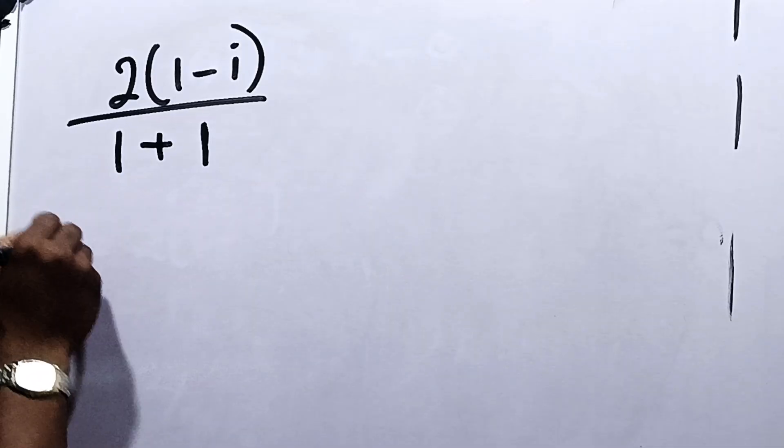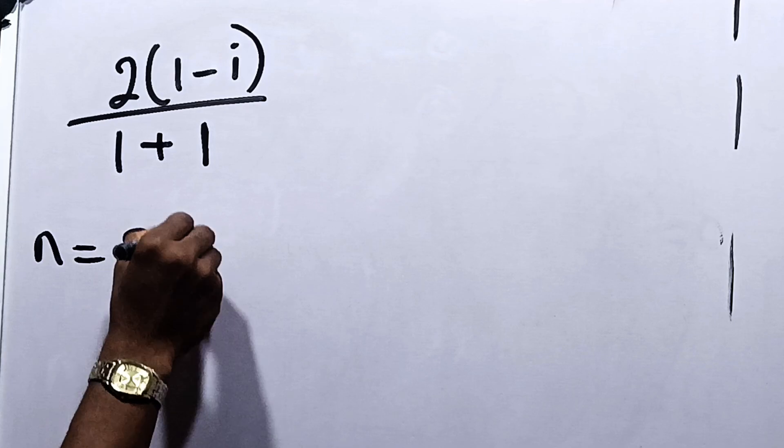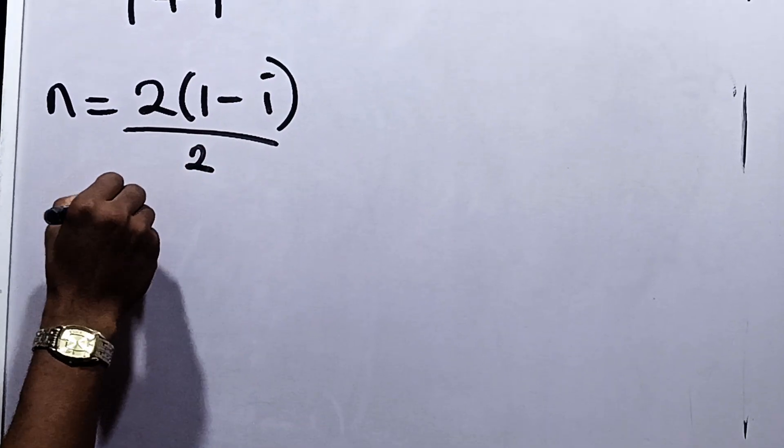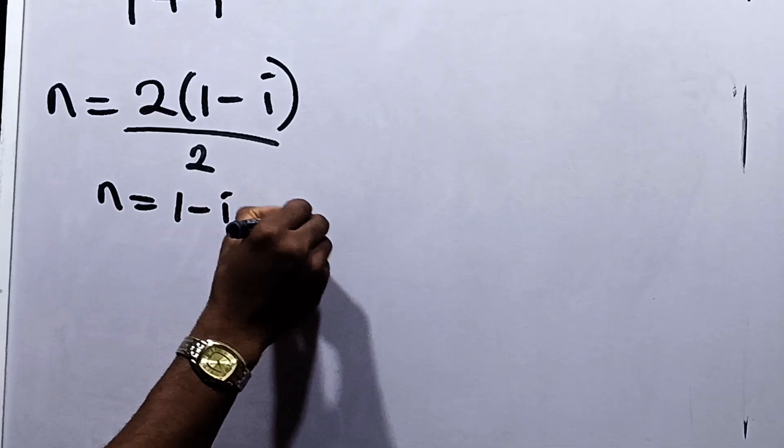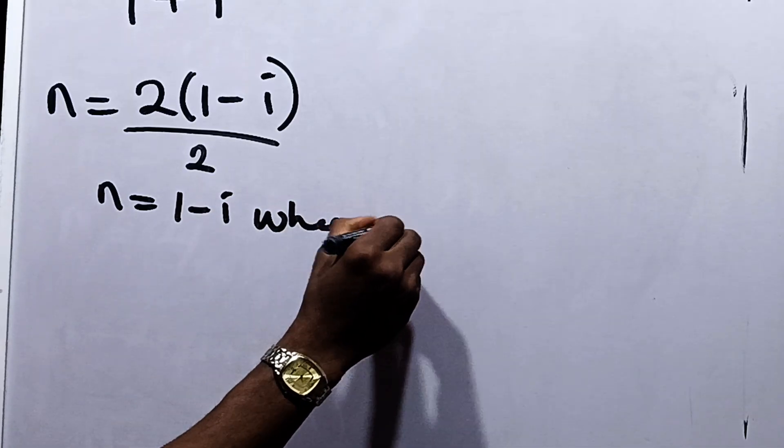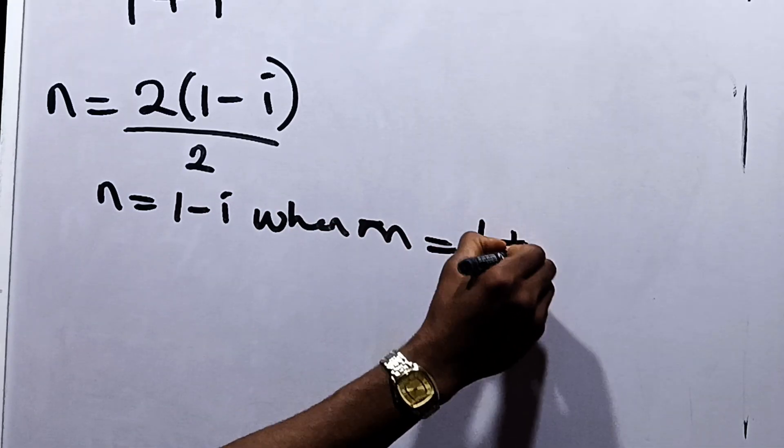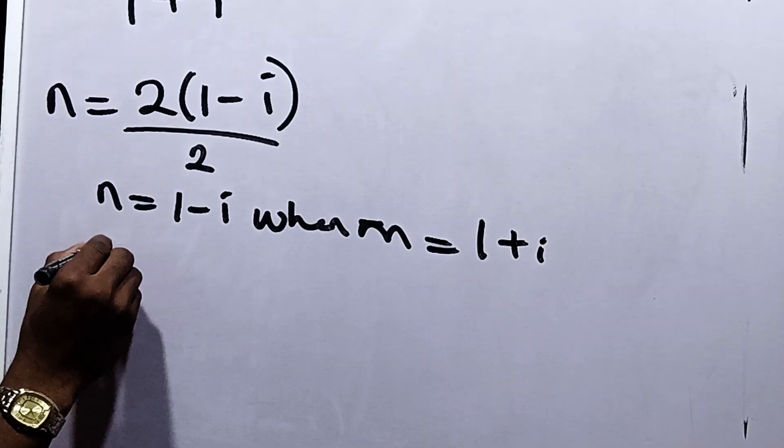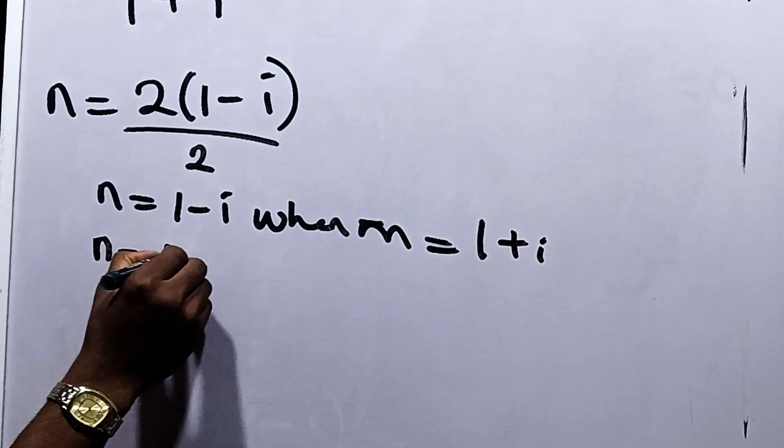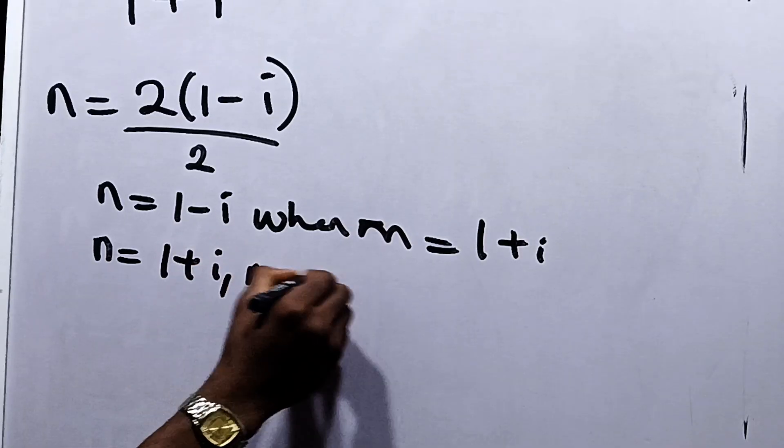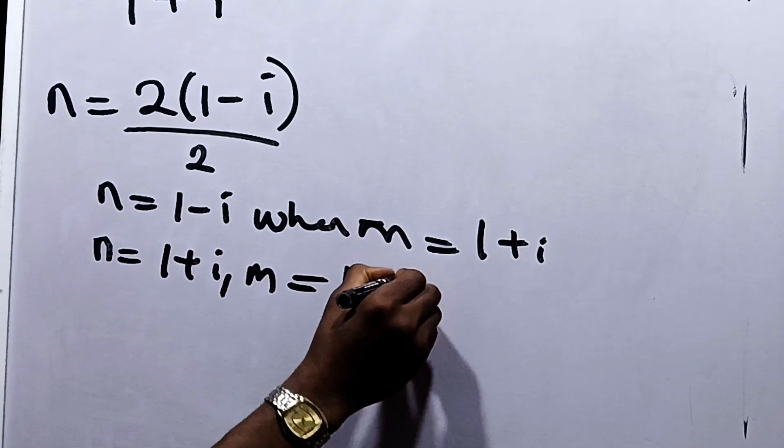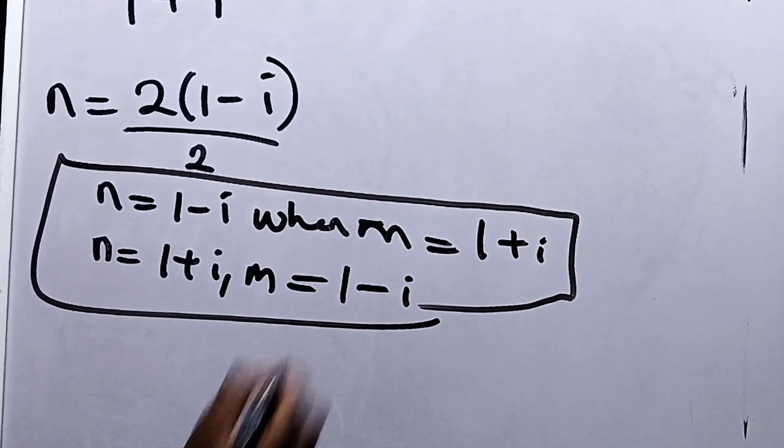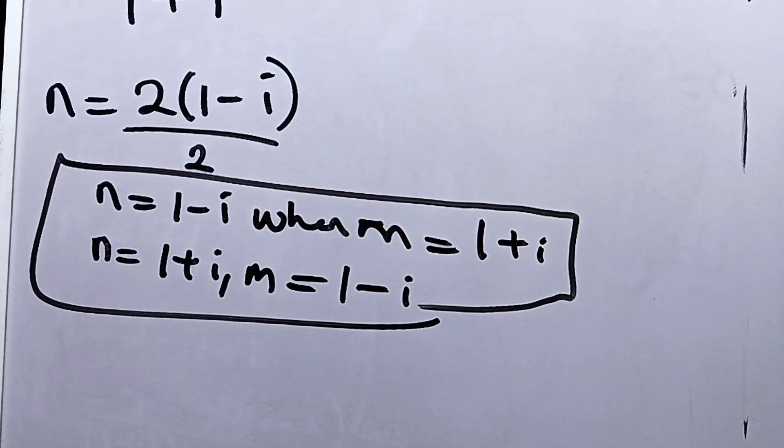Hence, from here, our n now becomes equal to 2 times 1 minus i divided by 2. So our n becomes equal to 1 minus i when m is equal to 1 plus i. Hence, invariably, it means that when n is equal to 1 plus i, m is equal to 1 minus i. So these are the two answers or the four answers for n and m in this equation.